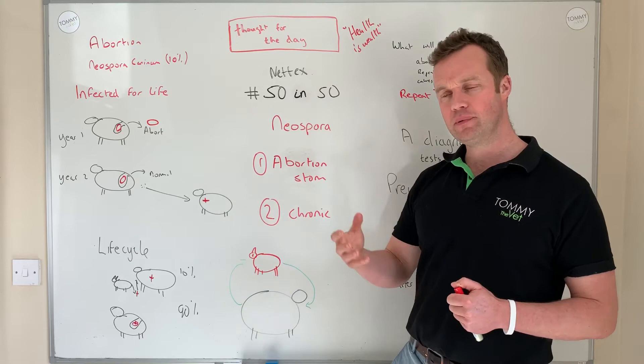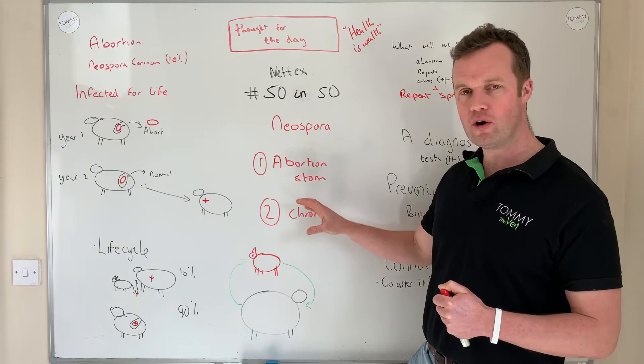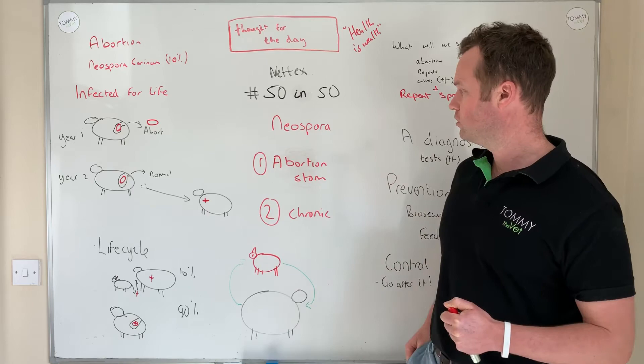If you had a hundred cows, you might have three or four abortions, and there'll be animals that become positive but won't abort — those calves, when born, continue the cycle because they're continuously positive. So Neospora can be a slow burner, still causing significant losses, through to the extreme of abortion storms.